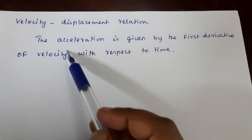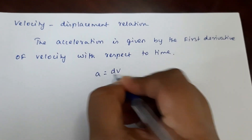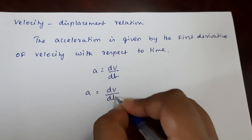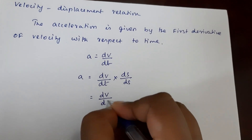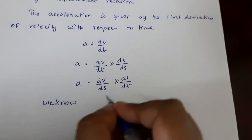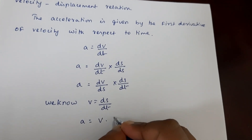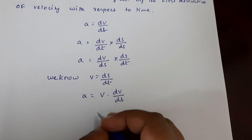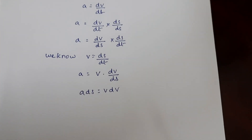The next is the velocity-displacement relation. The acceleration is given by the first derivative of velocity with respect to time, so we can write a is equal to dv by dt. Now I am going to multiply and divide by ds and rearrange it, so I can write it as dv by ds into ds by dt. We know v is equal to ds by dt, so we can write a is equal to v into dv by ds. This gives us a into ds is equal to v dv.